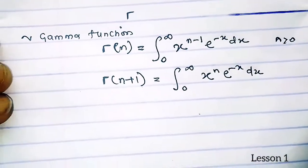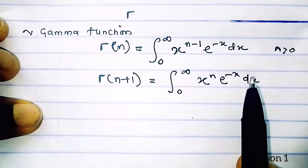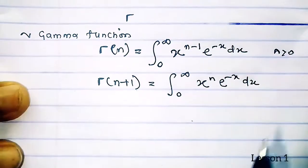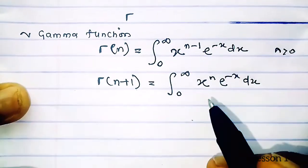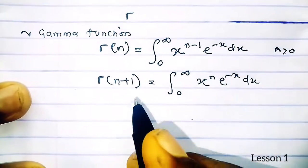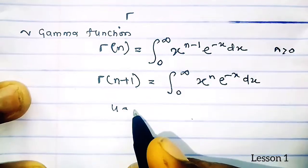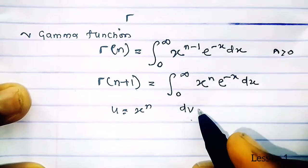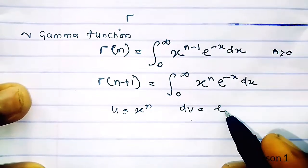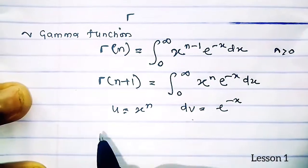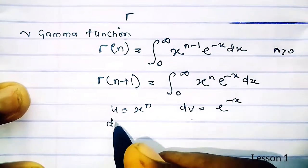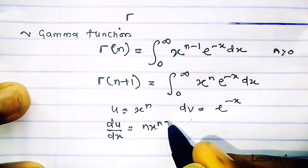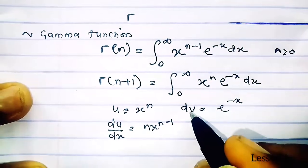Let's solve this using integration by parts to deduce our formula. Let u equal x raised to the power n, and let dv equal e to the minus x. Then du/dx equals n times x raised to the power n minus 1.